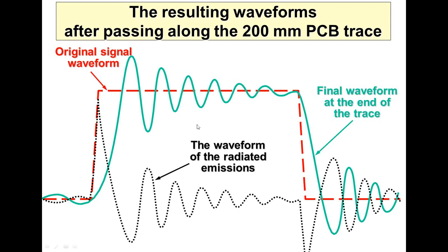Signal integrity is intimately related with EMC. Whenever you see a waveform that starts off nice and square and ends up being distorted like this, it's telling you that you've got emissions. The bigger the peaks, the bigger the emissions. We can tell what the predominant emission frequency is from the ringing frequency. If that ringing frequency is 133 MHz, then from our oscilloscope we know that we've got a problem at 133 MHz.